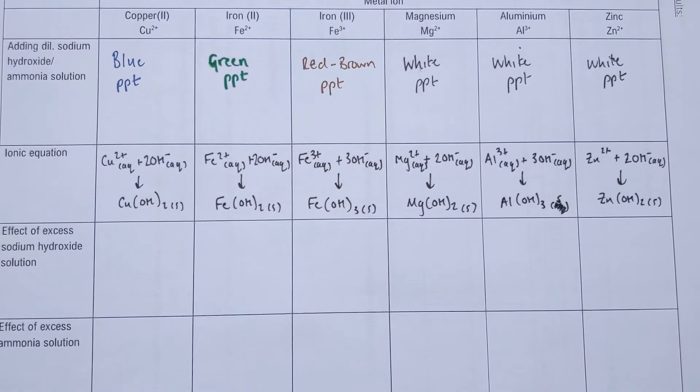We're pretty much the whole way there. We've got a way of working out if something's copper, iron 2+, iron 3+, and also if it might be magnesium, aluminum or zinc. But the big problem is we can't tell apart magnesium, aluminum and zinc at the minute. They're all white precipitates. So if I form that white precipitate, I've got no idea which one of the three it might be.